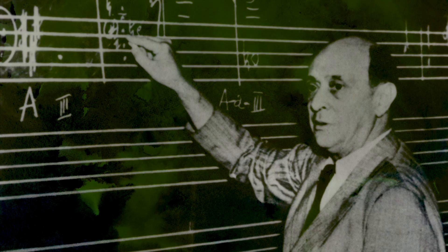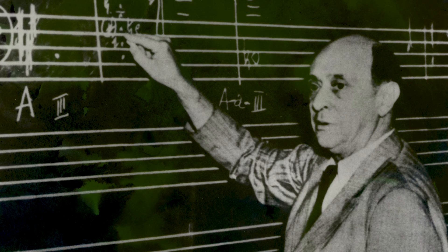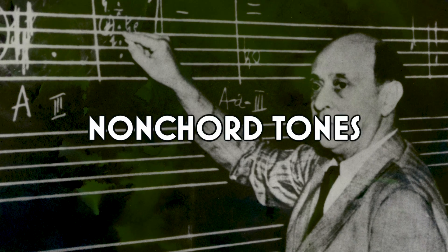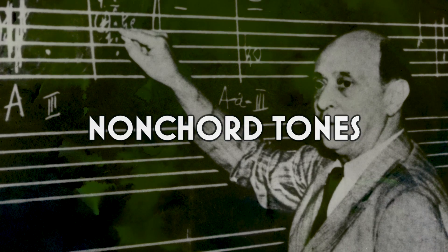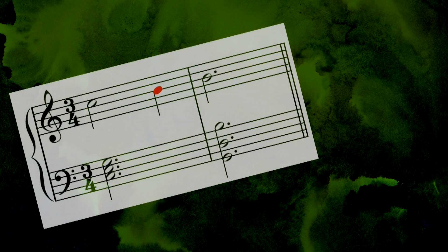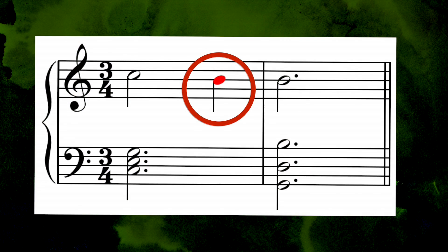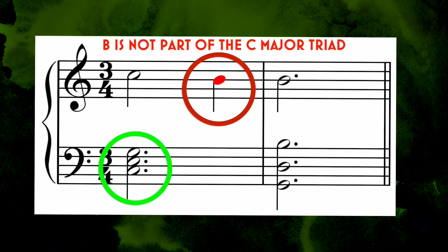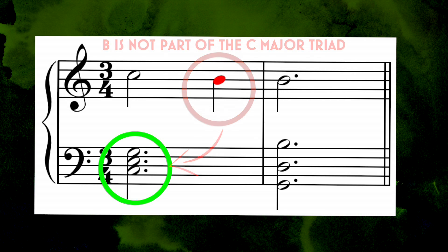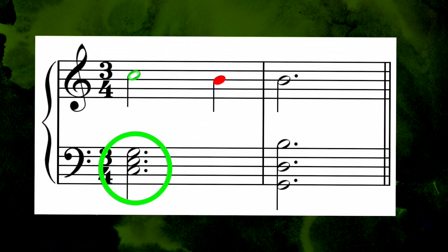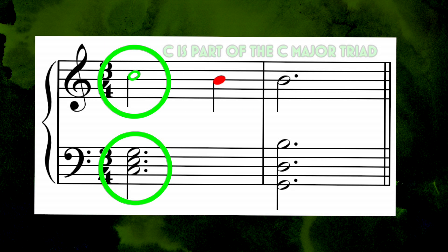During the average music theory course, the subject of nonchord tones is an often all too neglected topic. Nonchord tones are basically tones that are not part of the harmonic structure with which they are played. Using the same terminology, chord tones are tones that are inside the harmonic context of a piece.